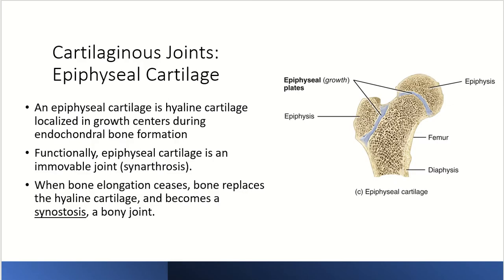The epiphyseal cartilage, or growth plate, eventually turns into an epiphyseal line. This is made of hyaline cartilage localized in growth centers during endochondral bone formation. Functionally, epiphyseal cartilage is an immovable joint — a synarthrosis. When bone elongation is complete, the hyaline cartilage is replaced by bone, and the epiphyseal cartilage becomes a synostosis or bony joint.